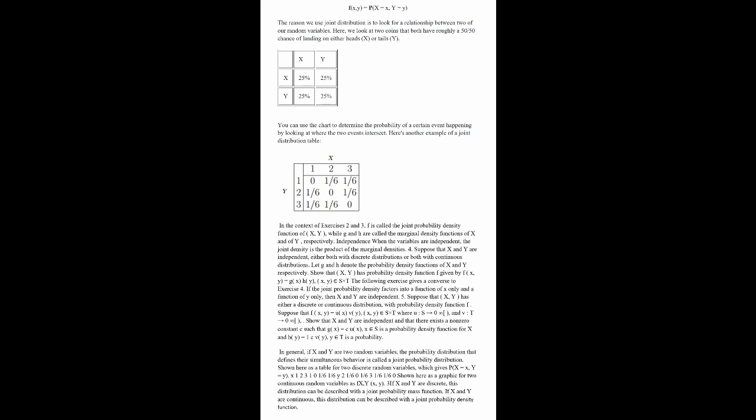In general, if X and Y are two random variables, a probability distribution that defines the simultaneous behavior is called a joint probability distribution. Shown here as a table for two discrete random variables which gives P of X equals X, Y equals Y.